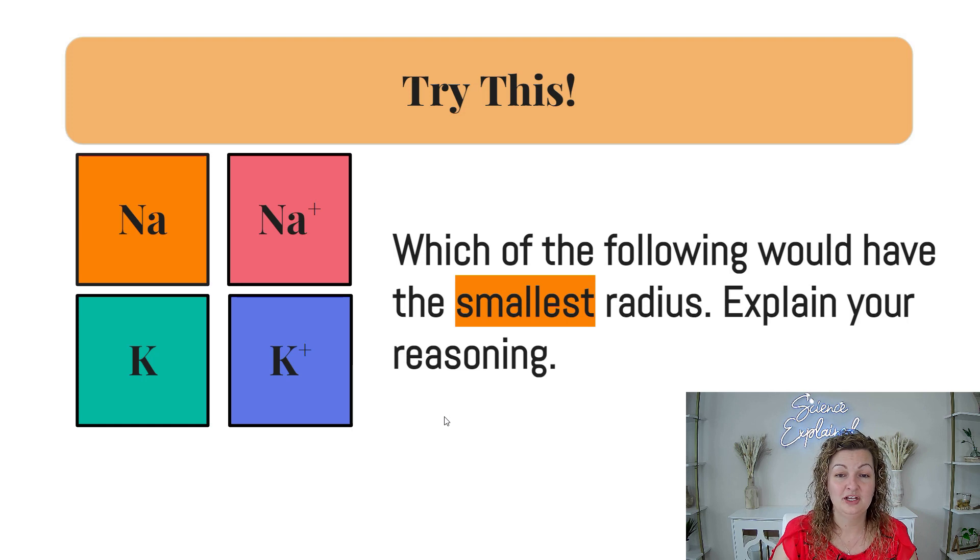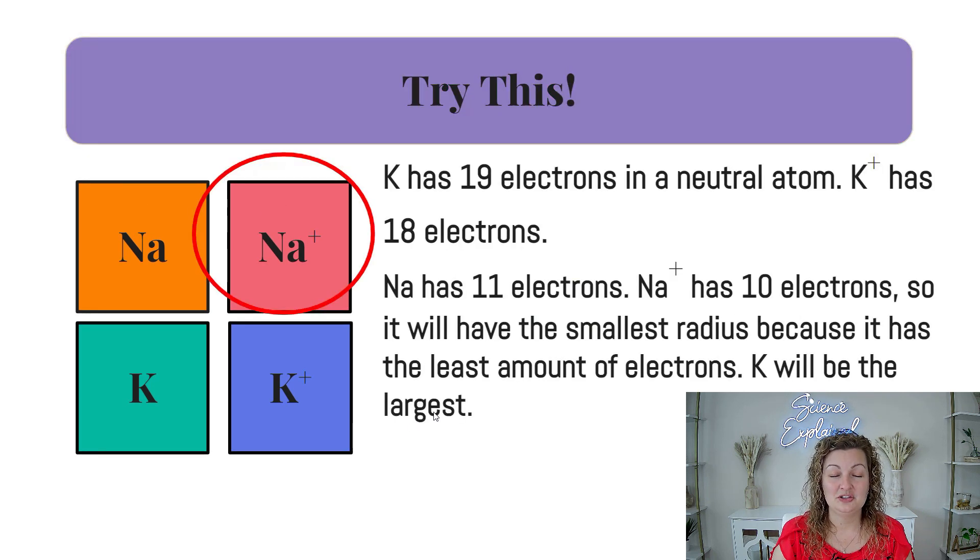All right, let's go ahead and try this one. This time I want you to say which one is the smallest radius. Pause your video and we'll go over the answer. Okay, let's go ahead. Let's talk this through. So potassium, if you look on the periodic table, it does have 19 electrons in a neutral atom. When we make that a cation, a positive one, we're taking away one of those. So now we have 18 for the potassium plus, right? If you look up sodium on the periodic table, it has 11 electrons and sodium plus then has 10 because we're removing one of those electrons. So it's going to have the smallest radius of all of them because we can put them in number order 10, 11, 18, and then 19 would be the largest one.